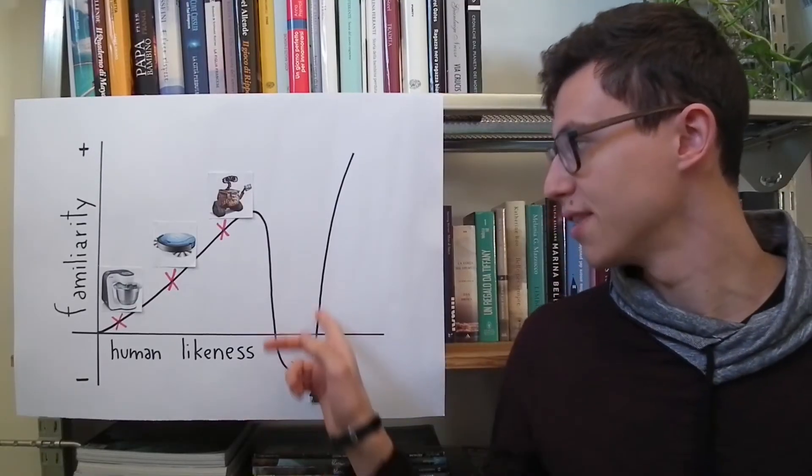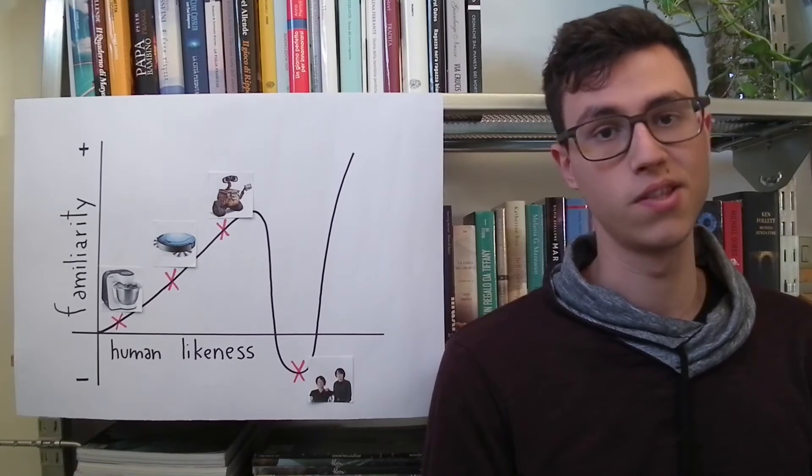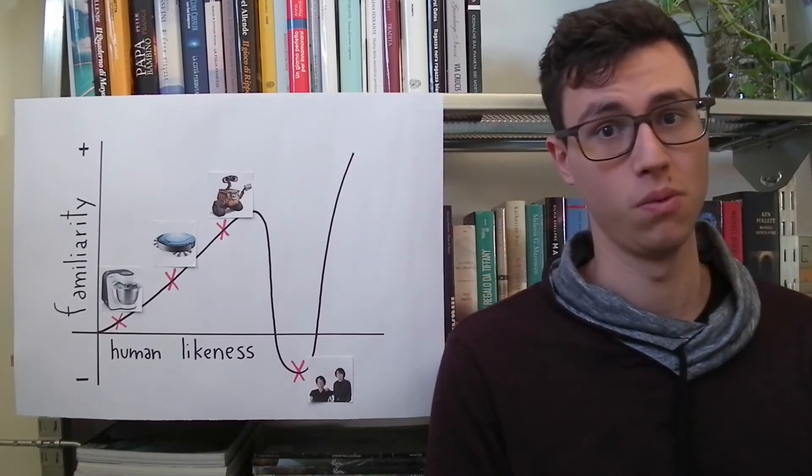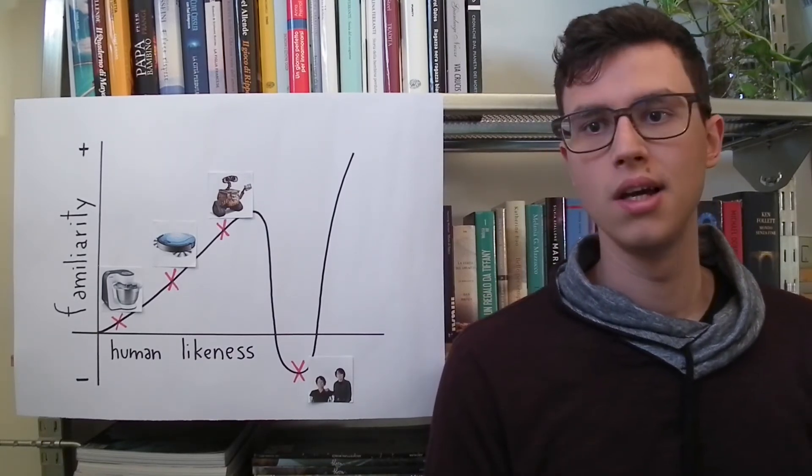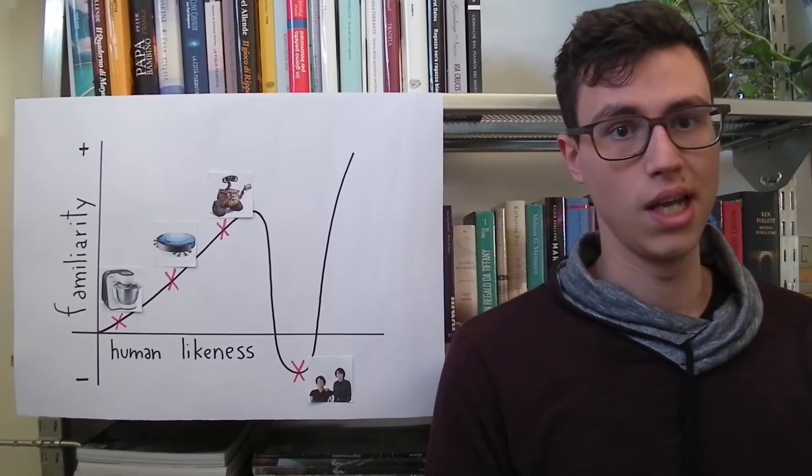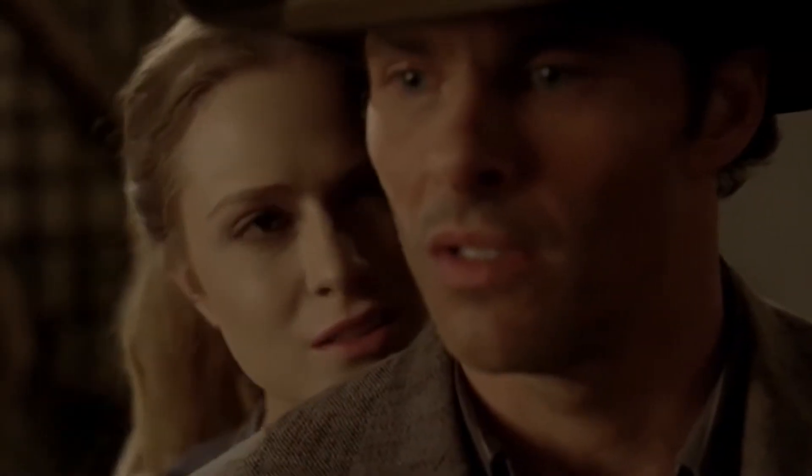For climbing up the Uncanny Valley, we have to make robots so similar to humans that it's impossible to tell the difference. Then, of course, the affection is maximum, the same that we would have for a human. This, of course, is not reality yet, but it's the case of TV series such as Westworld, a TV series where robots are so similar to humans that it's impossible to tell the difference.